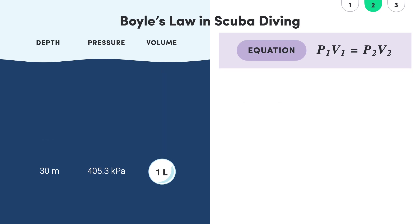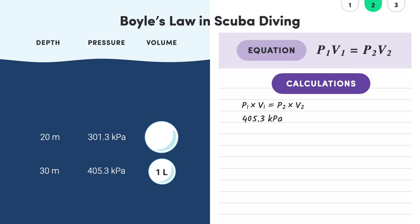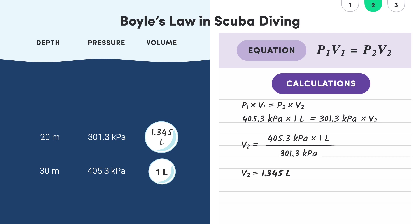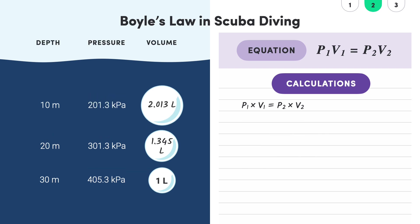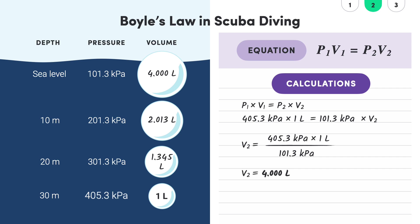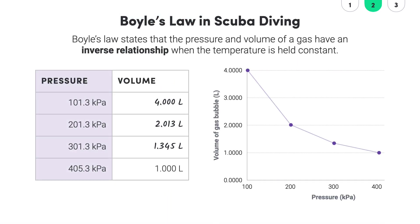Let's go through the process of calculating the volume at a depth of 20 meters. Our P1, or starting pressure, is 405.3 kilopascals and our V1, or starting volume, is 1 liter. The pressure at 20 meters, or our P2 value, will be 301.3 kilopascals, leaving us with an unknown V2. Some quick rearranging to get V2 by itself and we get a value of 1.345 liters. We can do this same process at 10 meters, and finally at sea level. So the volume of the bubble increases from 1 liter at 405.3 kPa, to 1.345 liters at 301.3 kPa, to 2.013 liters at 201.3 kPa, and 4.000 liters at sea level, which has a pressure of 101.3 kilopascals. Putting our data onto a graph, we can clearly see that the volume and pressure are inversely proportional, as described by Boyle's Law.